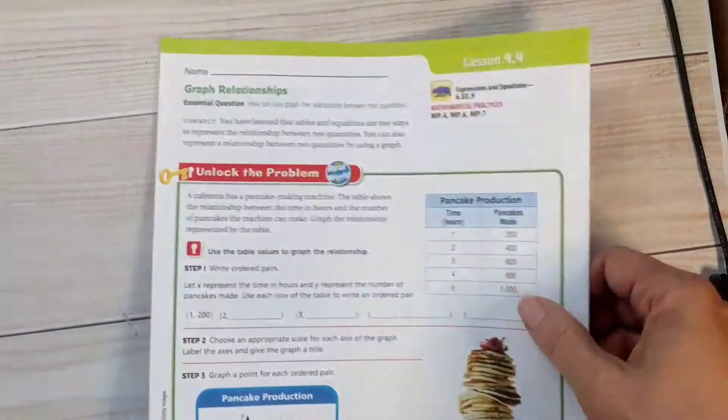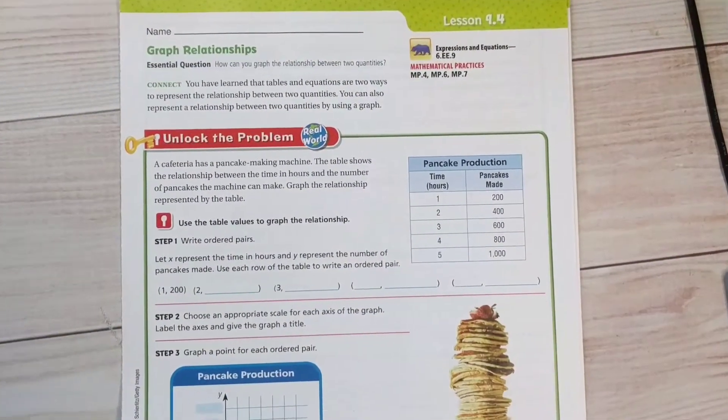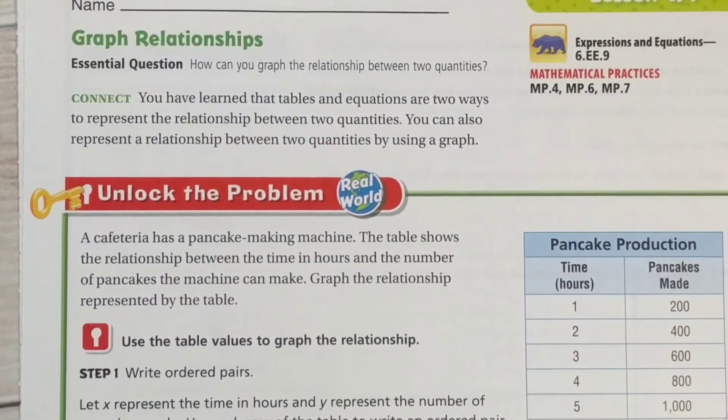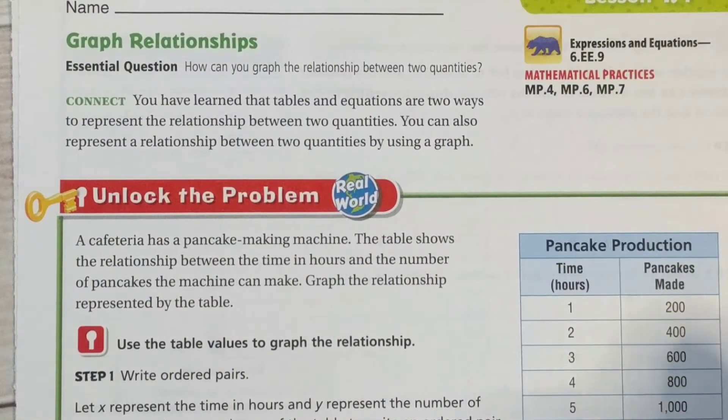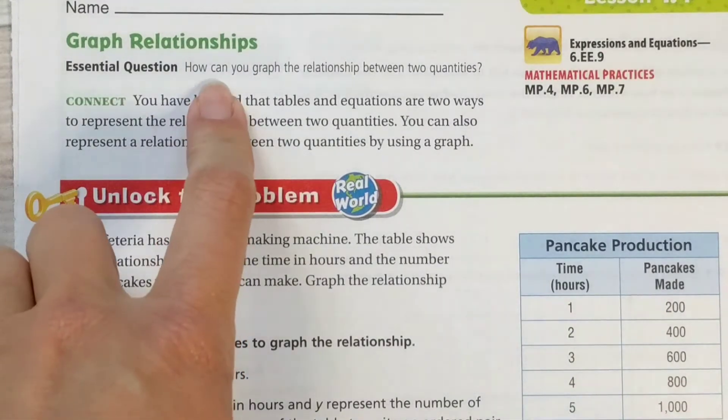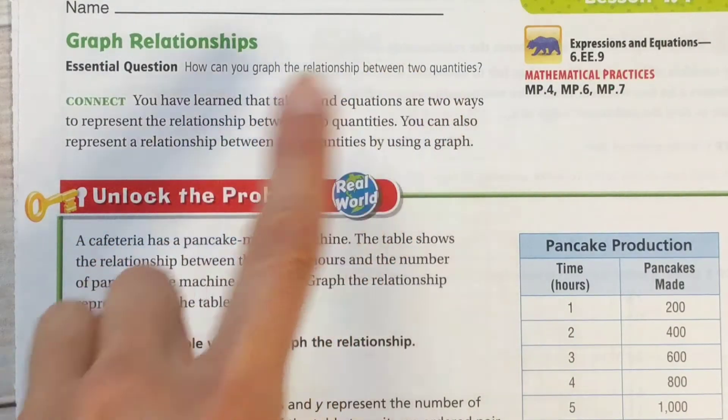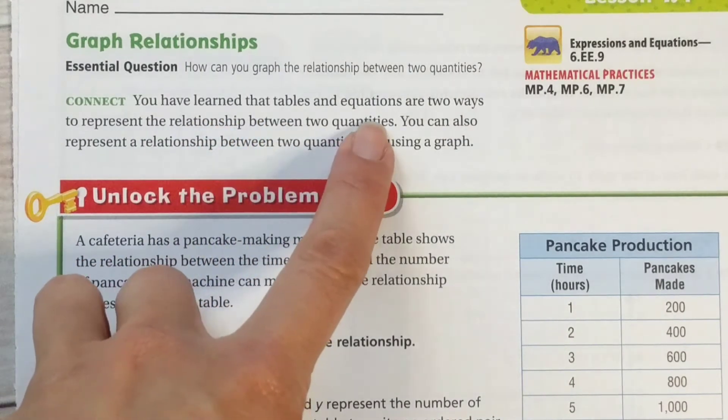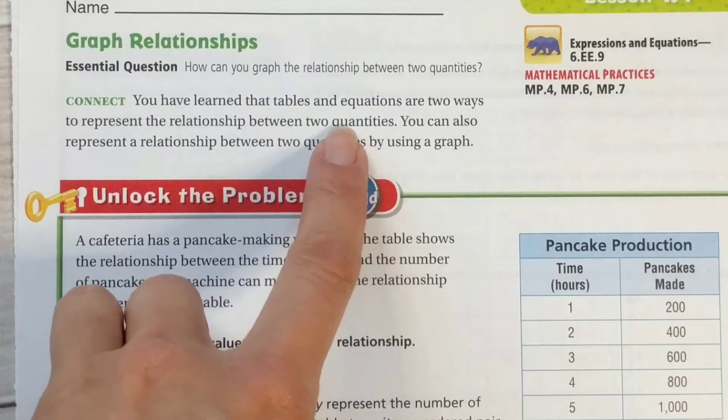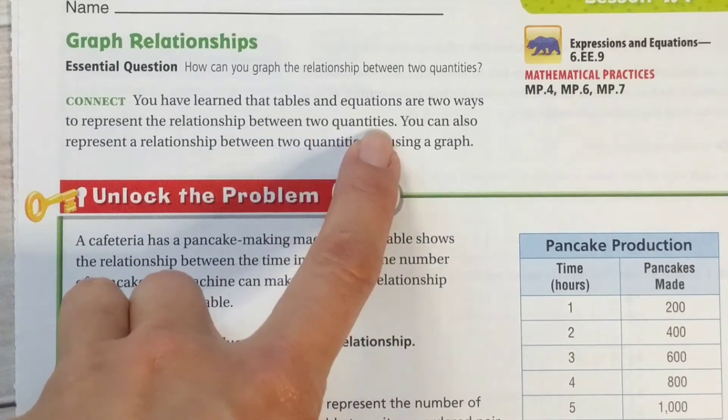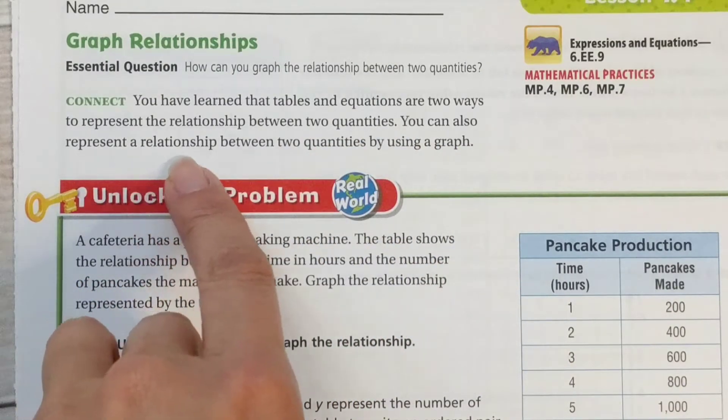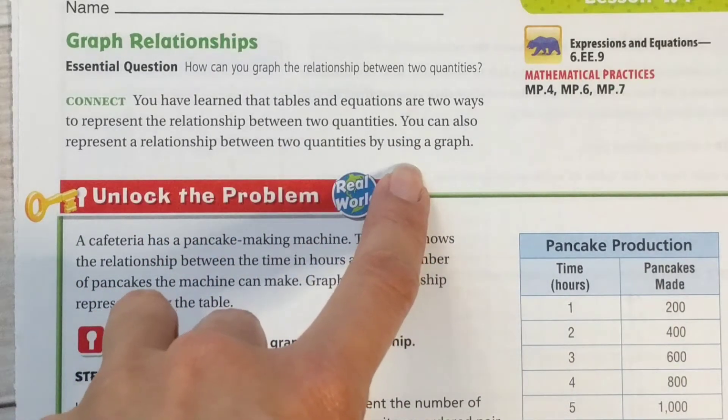Alright, let's take a look. To begin our lesson about graphing relationships on page 371 of your book, we read the essential question: how can you graph the relationships between two quantities? You have learned that tables and equations are two ways to represent the relationship between two quantities. You can also represent a relationship between two quantities by using a graph.